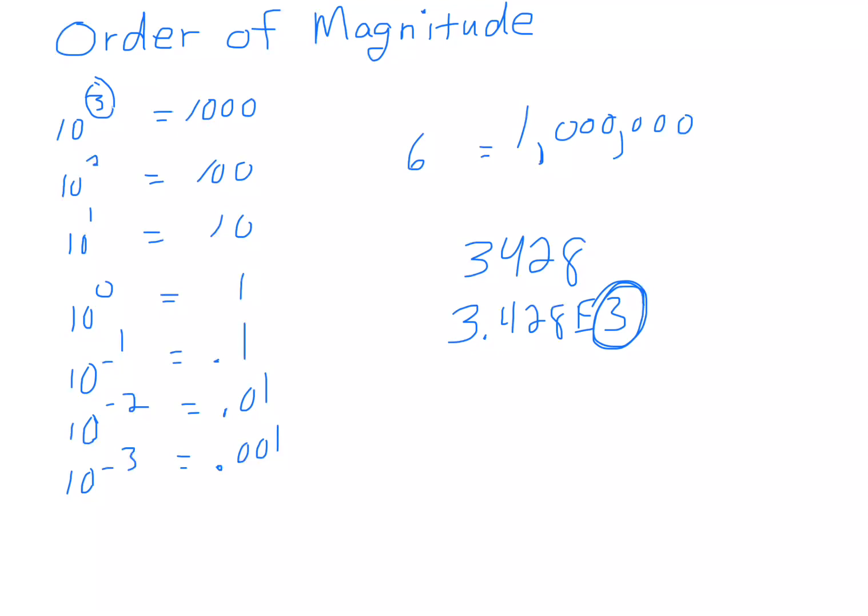And that's almost all the time kind of the case. If you put it in scientific notation, just whatever the exponent is behind the E, that's what we refer to as the order of magnitude.